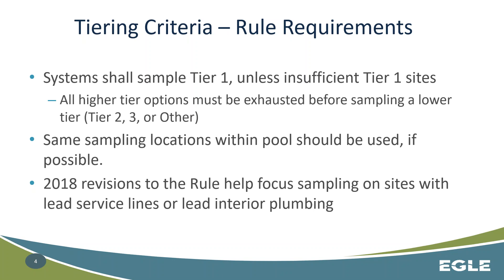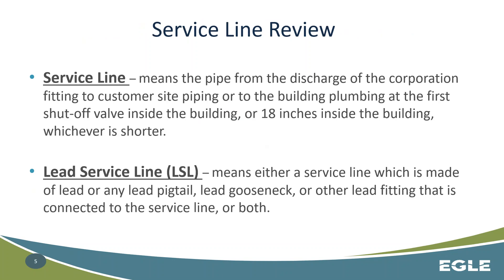With the revisions to the rule, we've refocused the tiering criteria slightly to focus more on lead. The service line is the discharge of the corporation fitting — that's at the water main — and includes the service line, which is the pipe that connects the water main to the home, and 18 inches into the home or the first shutoff valve, whichever is shorter. If any portion of that is lead, including any lead pigtail, gooseneck, or other lead fitting connected between that discharge of the corporation fitting to 18 inches within the home, it is a lead service line.